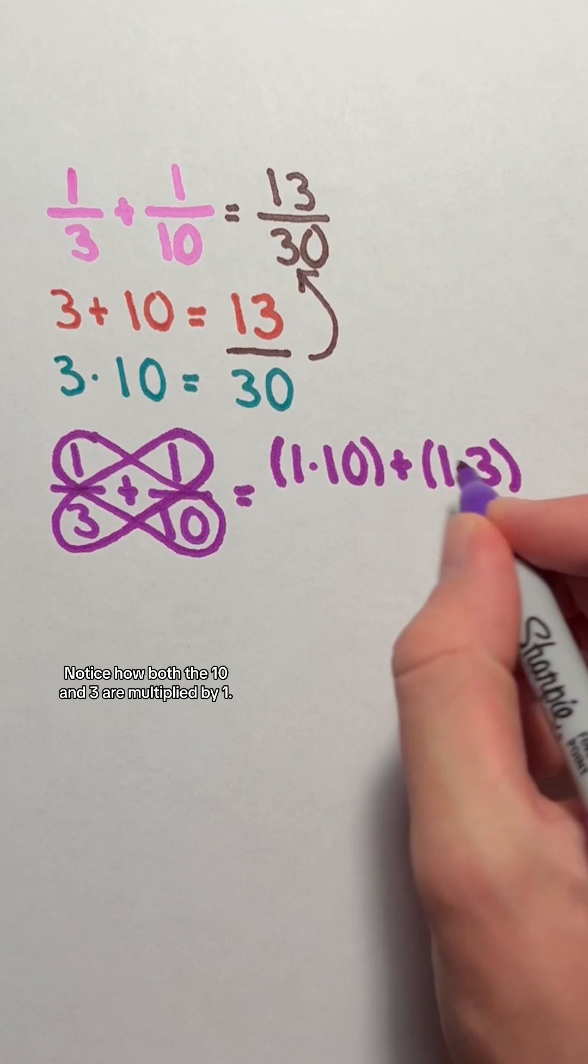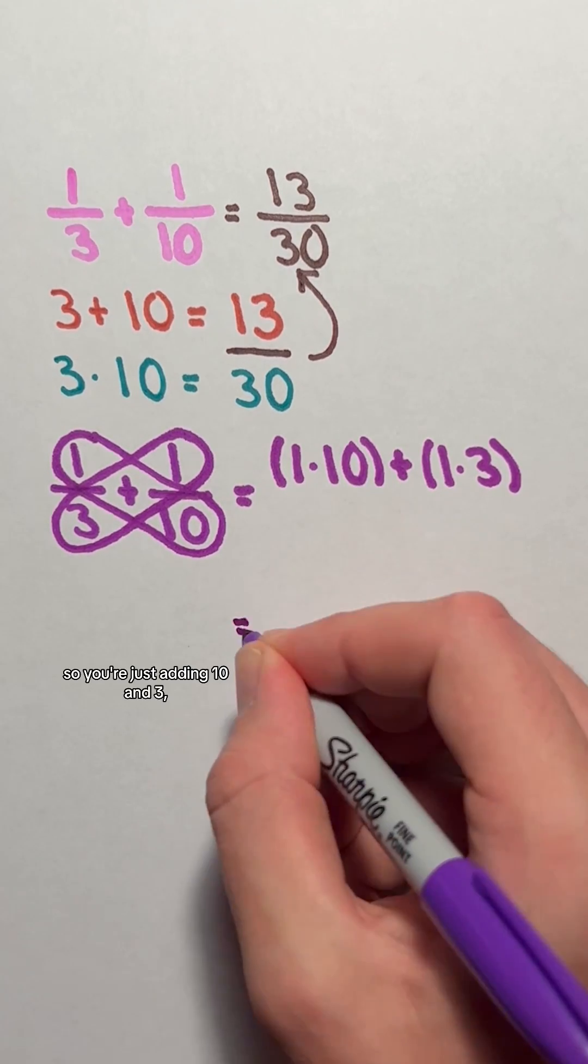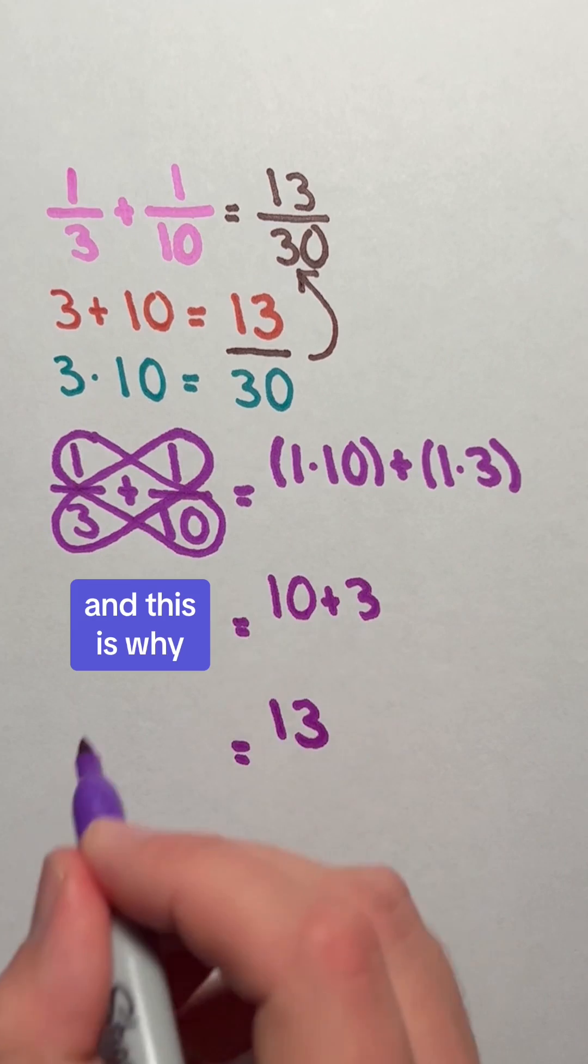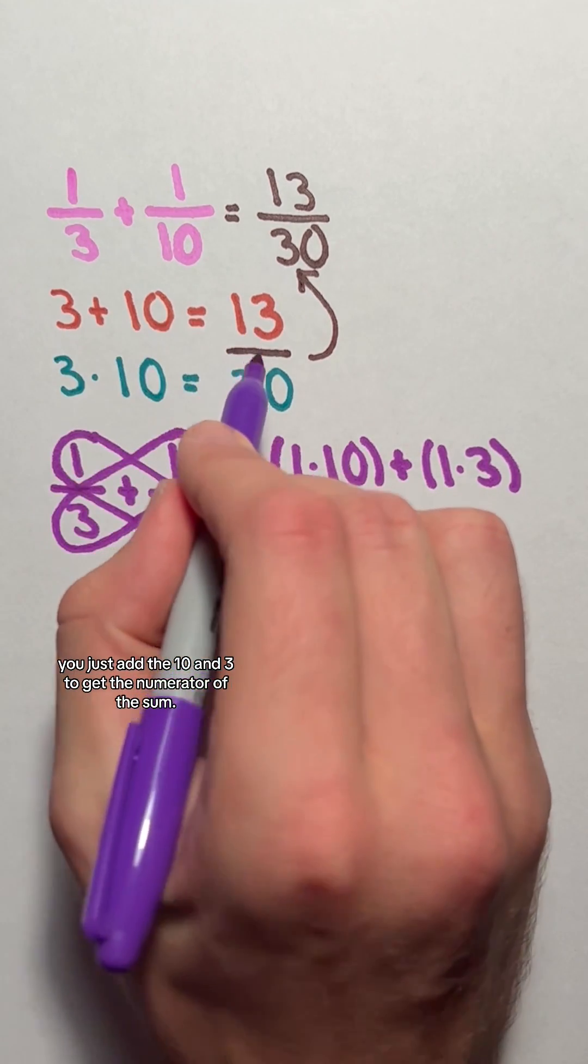Notice how both the 10 and 3 are multiplied by 1. The 1 isn't changing the 10 or 3, so you're just adding 10 and 3. And this is why in the trick you just add the 10 and 3 to get the numerator of the sum.